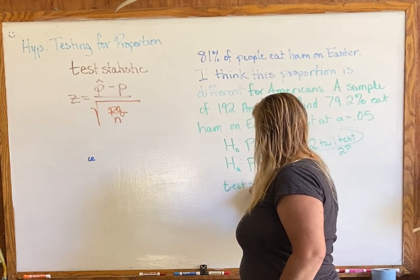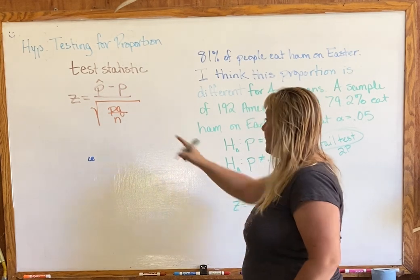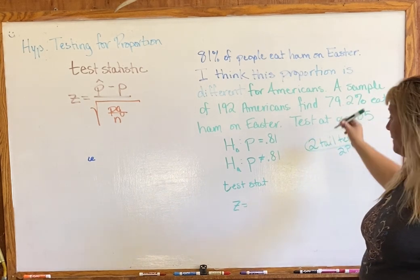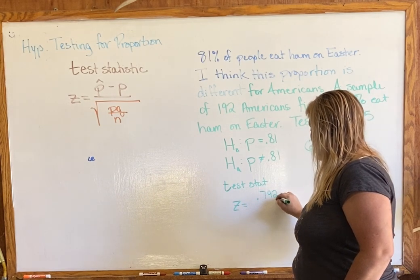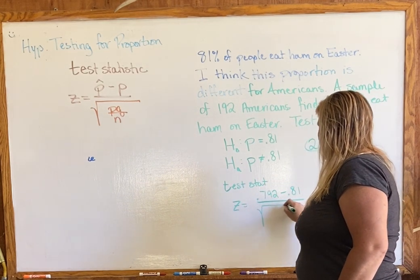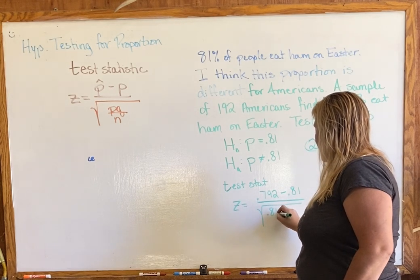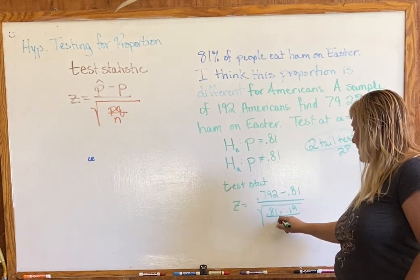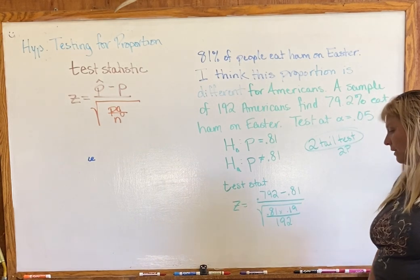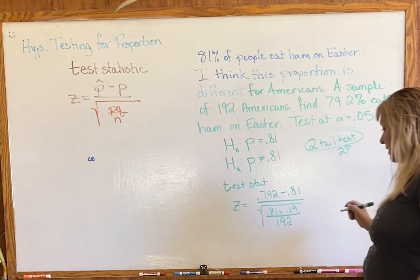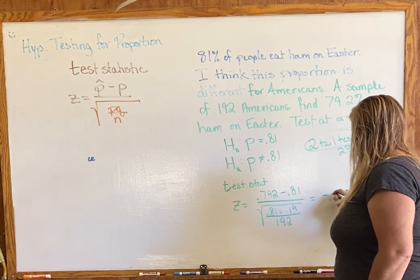Next we need our test statistic. Using our formula: p-hat minus p, over the square root of pq over n. P-hat from the sample is 0.792, minus the original p of 0.81, all over the square root of 0.81 times 0.19 divided by 192. Calculate the top first, then divide by the square root of the whole denominator. I get a Z-score of negative 0.64.